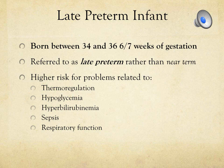With late preterm infants, it can be confusing because at 36 weeks a baby may weigh five, six, almost seven pounds — what you'd expect a term baby to look like. However, just because they look term on the outside doesn't mean they're term on the inside. Internal organ maturity does not match external appearance.